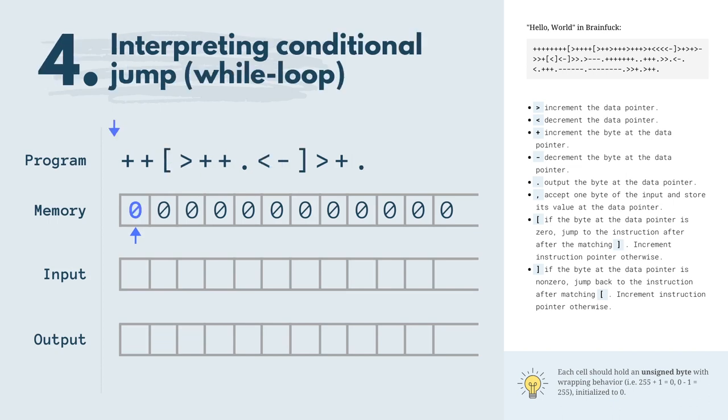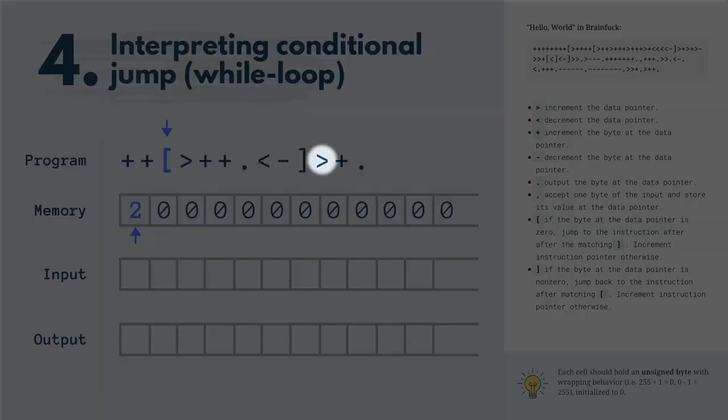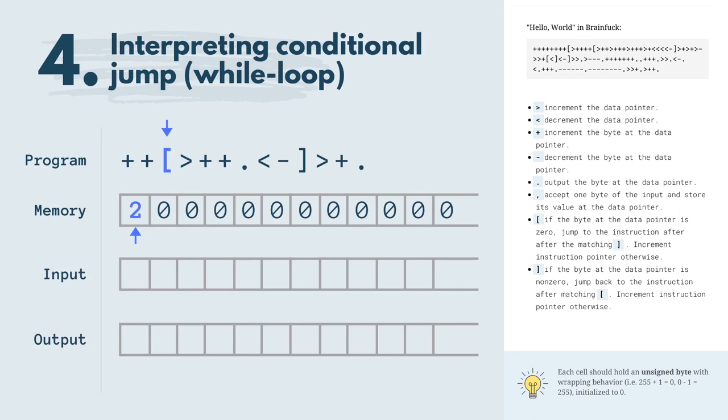The last program explains how to implement a while loop. It starts with incrementing the first cell in memory 2 times, then we go to the conditional jump instruction. The opening square bracket checks the value at the current data pointer in memory. If it's 0, it jumps to the next operation after the enclosing square bracket. Otherwise it moves to the next instruction. Because the value is 2, we are moving to the next instruction.